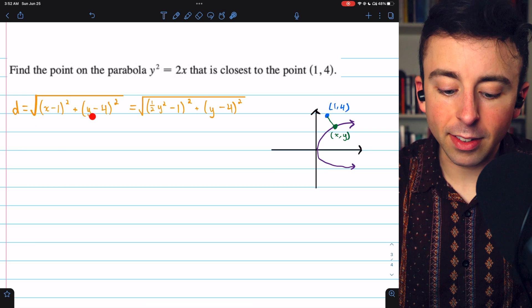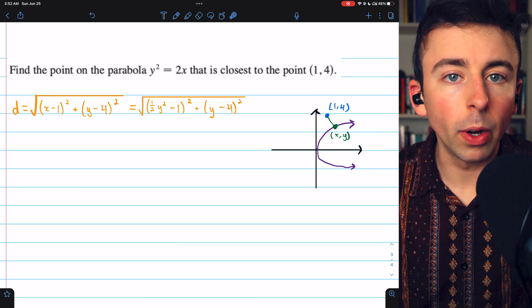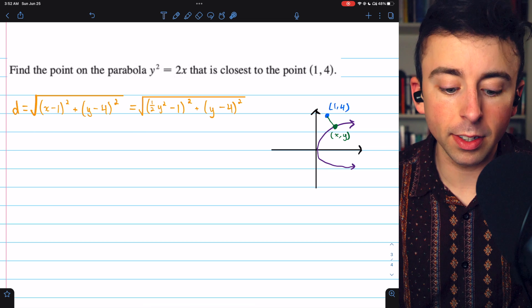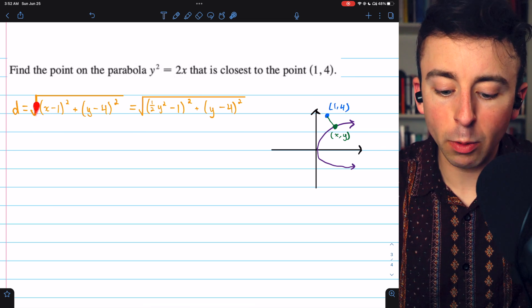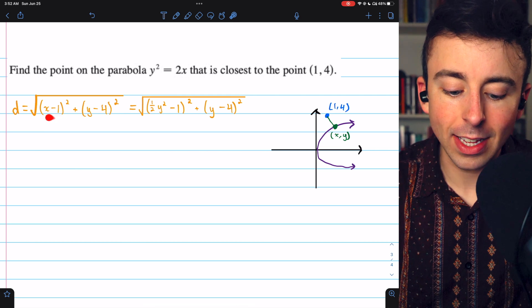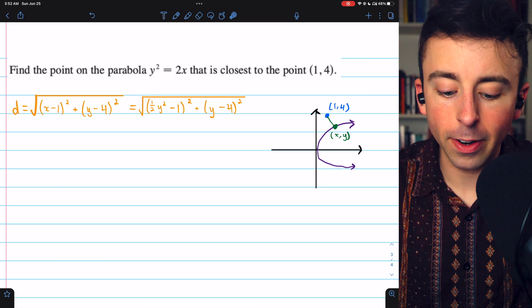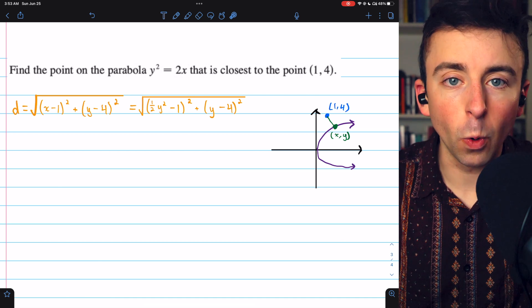This is the distance between any point (x,y) on this parabola and the point (1,4). It's the familiar distance formula. We have the square root of (x minus 1) squared, that's the difference in the x coordinates squared, plus (y minus 4) squared, the difference in the y coordinates squared.